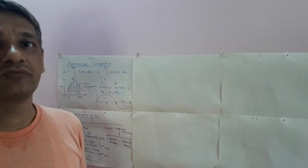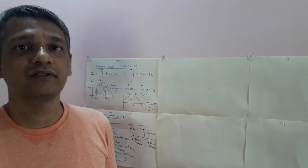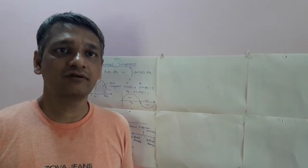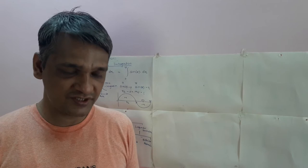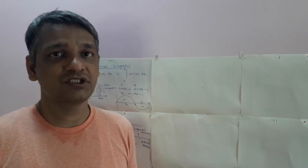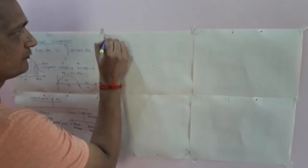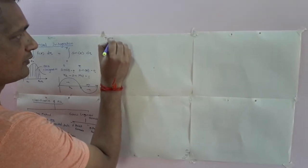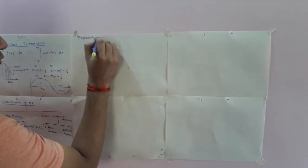In the last class we discussed the different classifications of numerical integrations and different methodologies depending on the degree of curve. Now we will start brief discussions of each and every method. The first method is nothing but the trapezoidal rule.